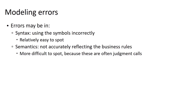The more difficult errors to manage are semantic errors, which means the model does not accurately reflect our business rules. These are more difficult to spot because they do require an understanding of the problem we're trying to solve. And sometimes these are related to judgment calls, where we've had to interpret what we think the business people meant.